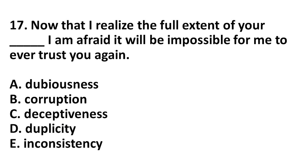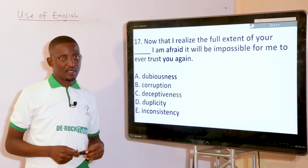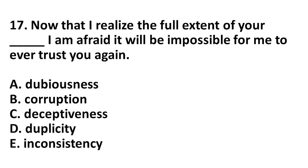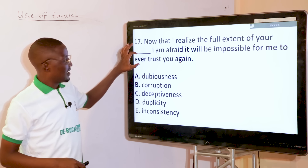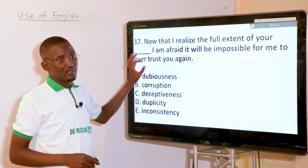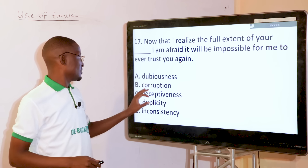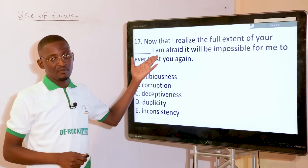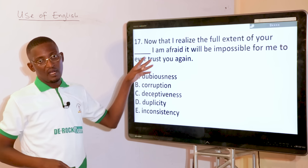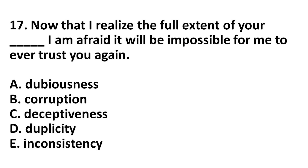Now that I realize the full extent of your dash, I'm afraid it will be impossible for me to ever trust you again. Options: dubiousness, corruption, deceptiveness, duplicity, inconsistency. Though all relate to lack of trust, the right choice for someone who should not be taken at their word is dubiousness — showing a kind of being dubious. Now that I realize the full extent of your dubiousness, I'm afraid it will be impossible for me to ever trust you again.